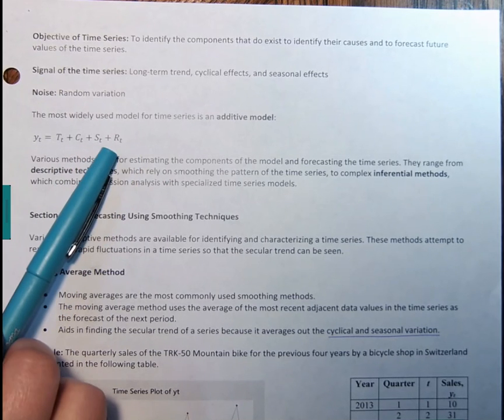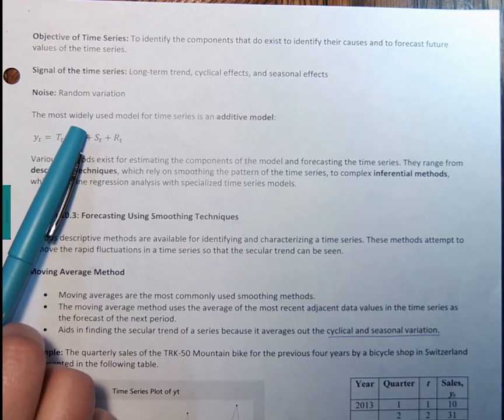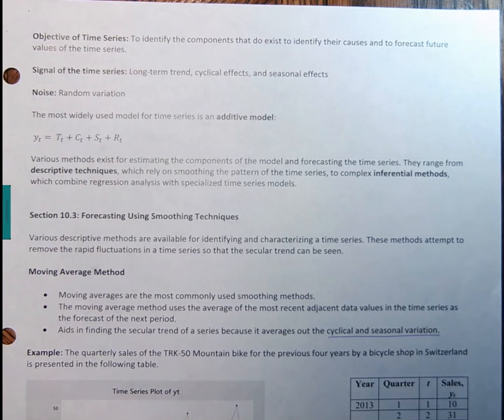So various methods exist for estimating the components of the model and forecasting the time series. They range from descriptive techniques, which rely on smoothing the pattern of the time series, to more complex inferential methods. And we're going to look at some of these as we move through the different sections. And the inferential methods, they combine regression analysis that you've seen before with specialized time series models. So this is going to conclude the sections 10.1 and 10.2 video. So we'll see you next time. Thank you.